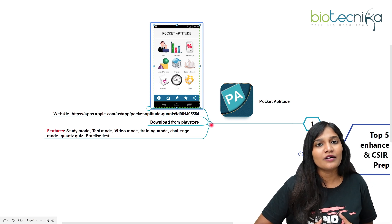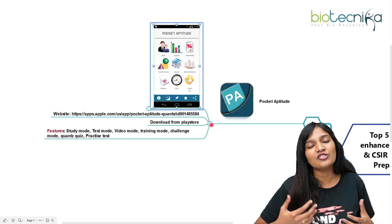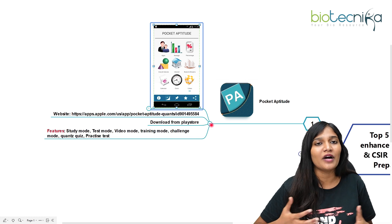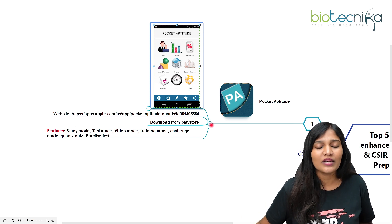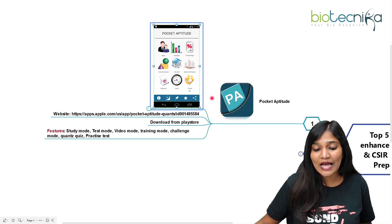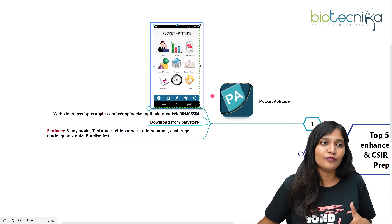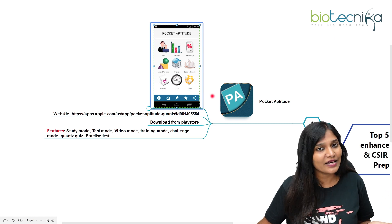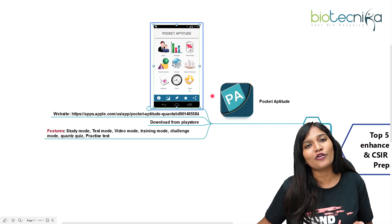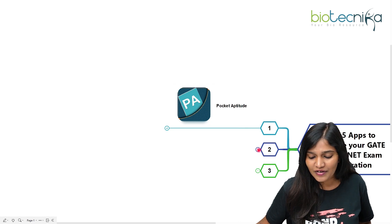Suppose if you're feeling bored during your preparation period, you can take the app and try to solve five to six questions when you're just looking at your phone. So Pocket Aptitude — I would definitely suggest it's a must-have app for CSAR net aspirants or gate aspirants. Aptitude is very important.